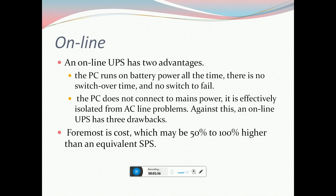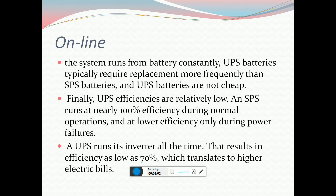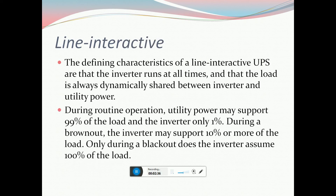Online UPSs have three drawbacks. First, cost is maybe 50% to 100% higher than an equivalent SPS. Second, since the system runs from battery constantly, UPS batteries require replacement more frequently than SPS batteries, and UPS batteries are not cheap. Finally, UPS efficiency is relatively low — while an SPS runs near 100% efficiency during normal operation, the online UPS runs at an efficiency as low as 70%, resulting in higher electricity bills.